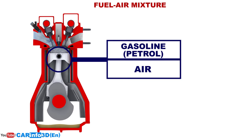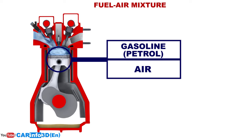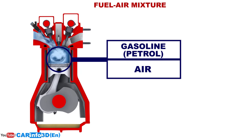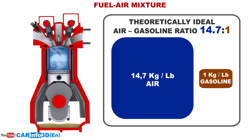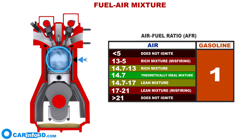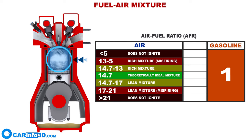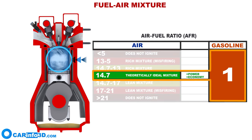The fuel-air mixture in gasoline engines is made up of air and gasoline, prepared using a certain fuel-to-air ratio. Ideally, complete combustion of 1 kg of gasoline requires 14.7 kg of air. In practice, the engine employs various mixture ratios, but the ratio of 1 to 14.7 is the best in terms of both power and economy.